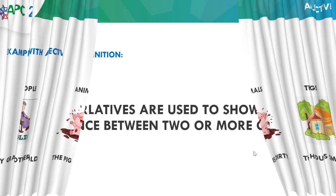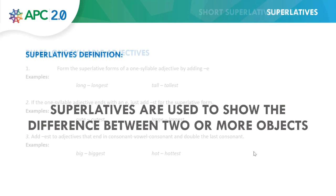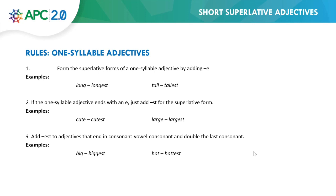Now we are going to learn about the superlatives. What is the definition? Superlatives are used to show the difference between two or more objects. And we have some rules. Rule one: one-syllable adjectives. We form the superlative by adding -est. Example: long → longest, tall → tallest. Rule two: if the one-syllable adjective ends with an e, we add only -st. Example: cute → cutest, large → largest.